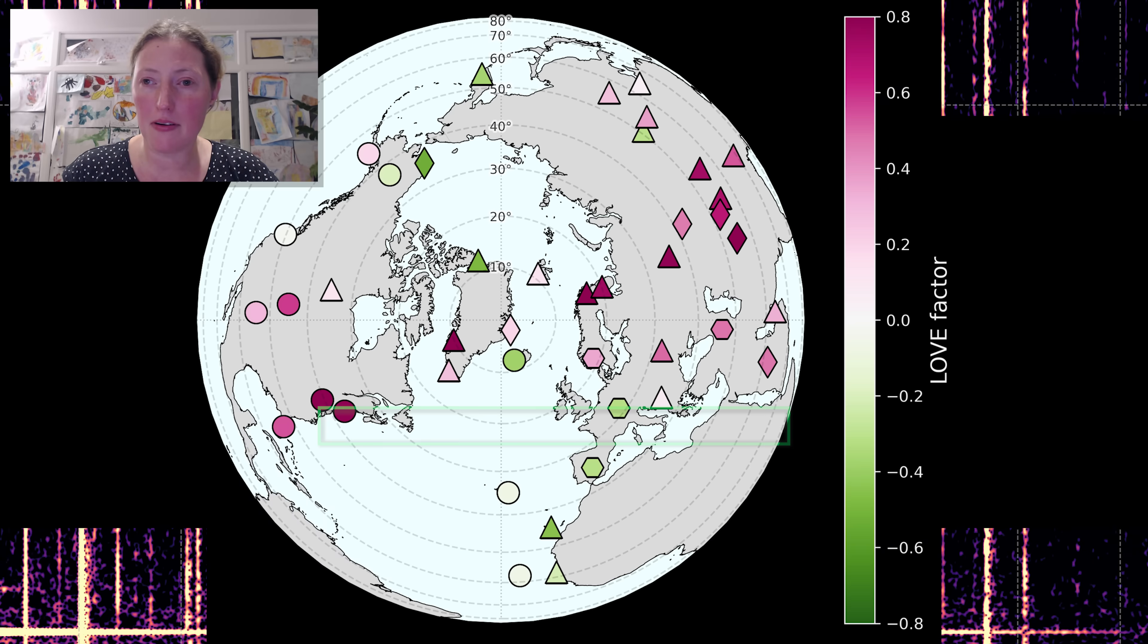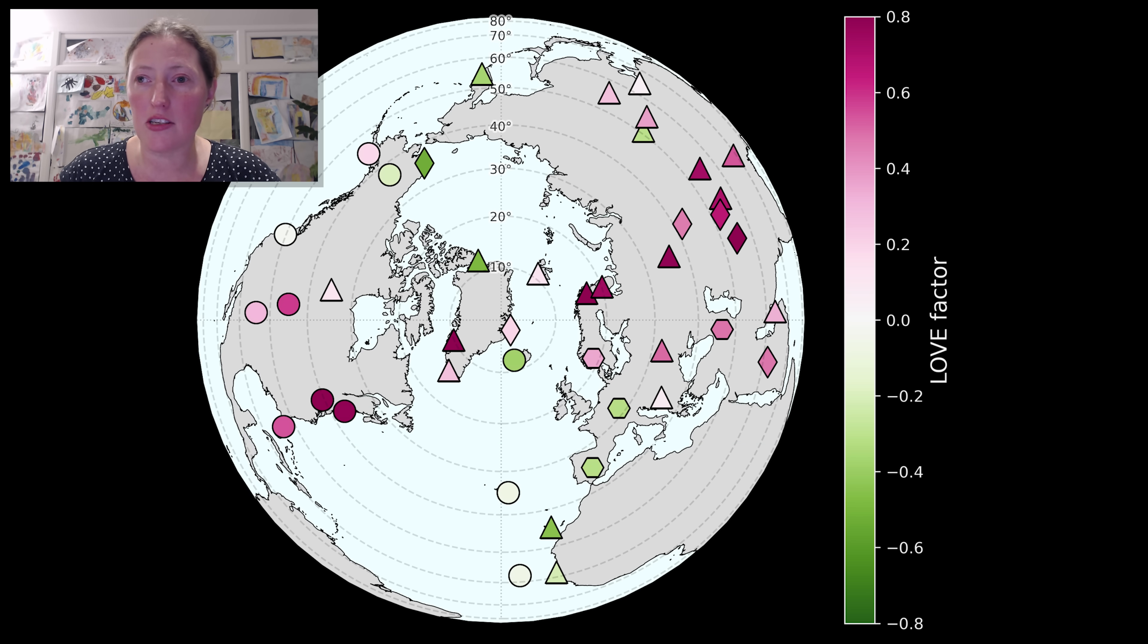This map, focused on East Greenland, shows seismic stations around the world that recorded the highest quality observations of the very long period monotonous signal. Each station is colored by the type of seismic surface wave that was recorded.